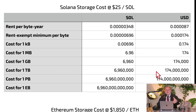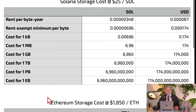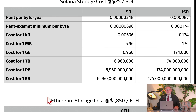We all have one terabyte in our laptops today, and for server apps, one terabyte is nothing. If you need one petabyte — a thousand terabytes — you end up paying $174 billion, which is prohibitive for almost anyone. Many of these apps likely need exabytes of storage. One exabyte would be $174 trillion — more than the United States GDP. It is crazy, and this is on Solana, one of the cheapest platforms.